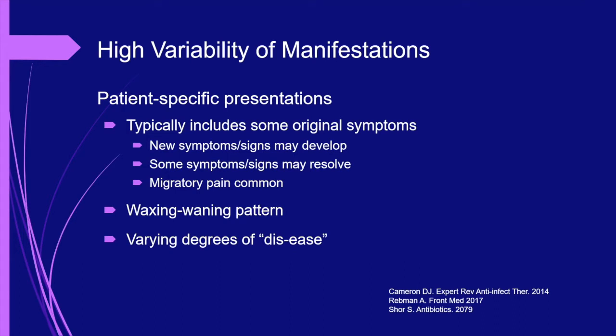Patients with persistent Lyme disease are a heterogeneous group, and their clinical presentations are quite variable. While there are some common manifestations, there is no single disease phenotype. In individual patients, the severity and presence of symptoms often follows a waxing and waning pattern. Additionally, some symptoms may resolve, and new symptoms consistent with Lyme disease may develop. Many patients with persistent symptoms have no impediments, while others are disabled.